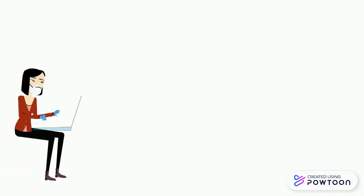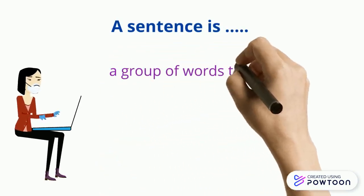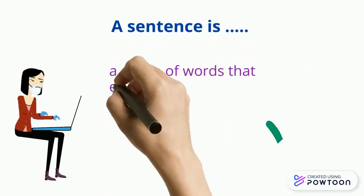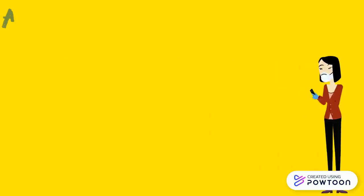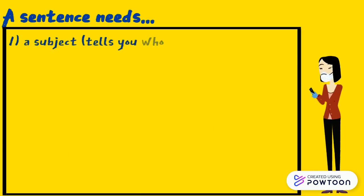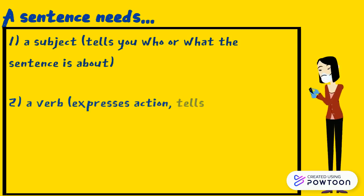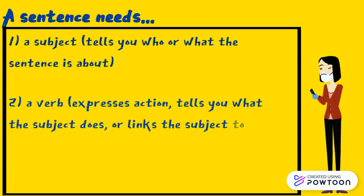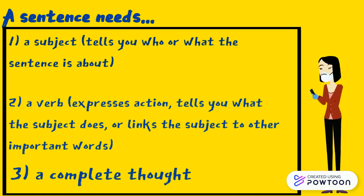To really understand a fragment, we must first talk about what a sentence is. A sentence is a group of words that expresses a complete thought. A sentence needs a subject that tells you who or what the sentence is about, a verb that expresses action or links the subject to other important words, and a complete thought.